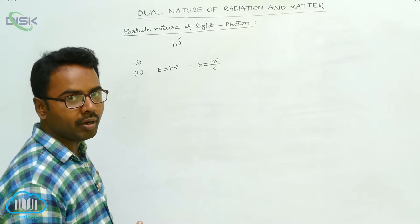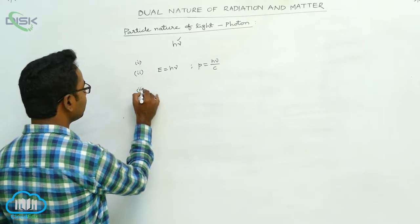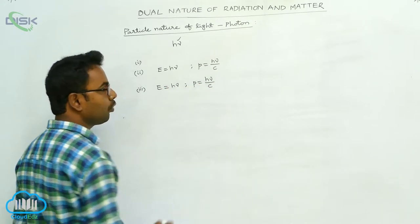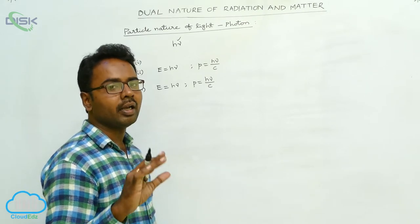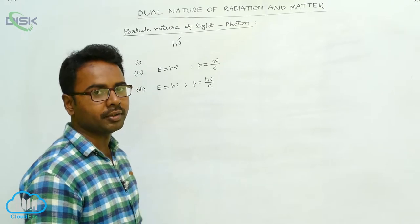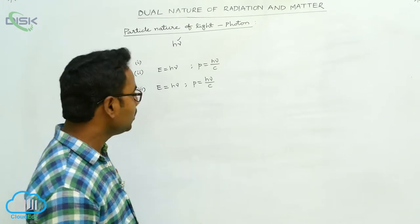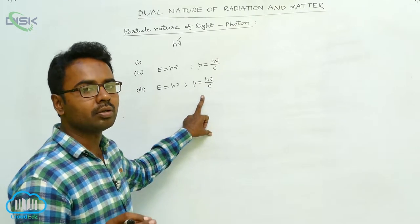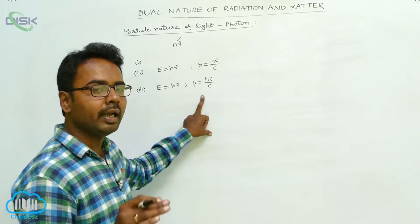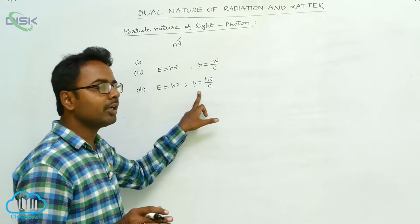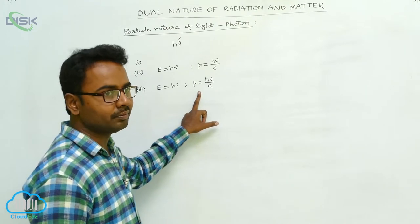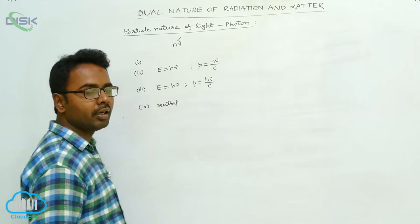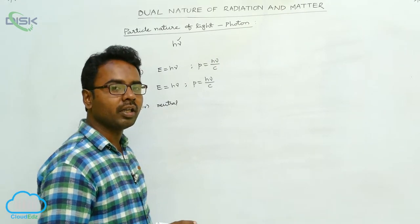The energy h nu and momentum h nu by C are the same for all photons in a particular electromagnetic wave or radiation. Even if we change the intensity of the radiation, the energy and momentum of all photons remains the same. Also, photons are electrically neutral.